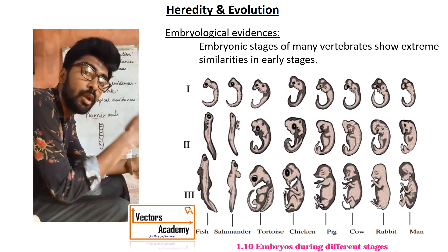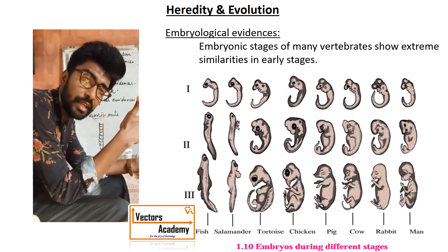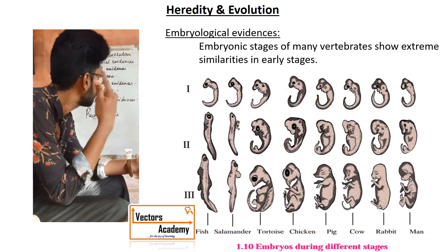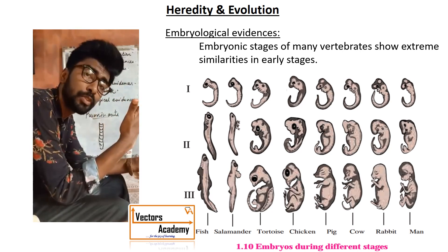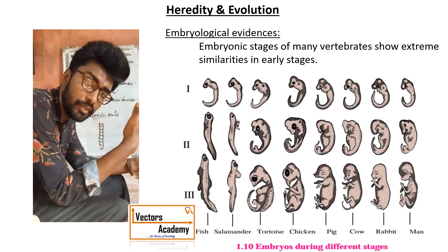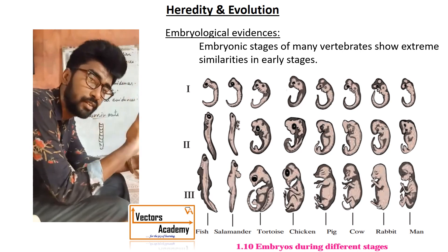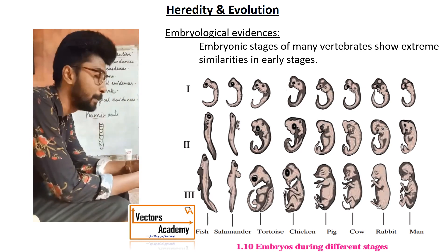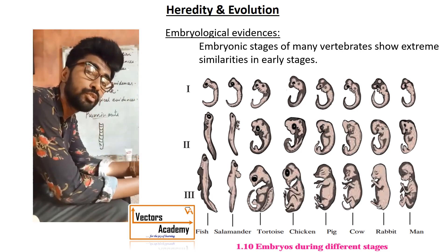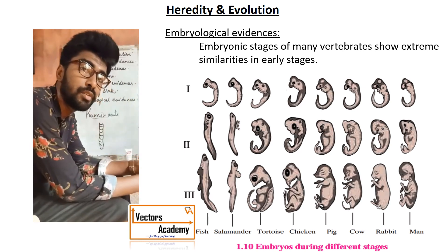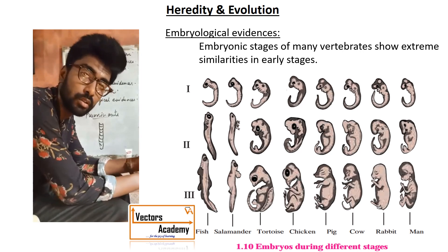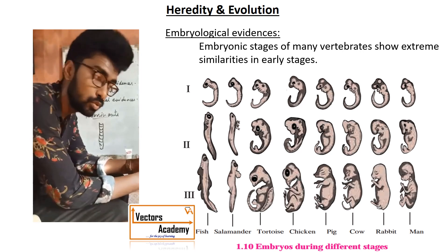In total, there are six evidences: morphological evidences, anatomical evidences, vestigial organs, paleontological evidences, connecting link, and embryological evidences. All these evidences led to the understanding of evolution. Thank you.